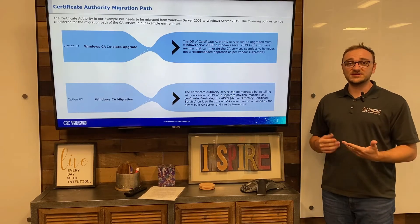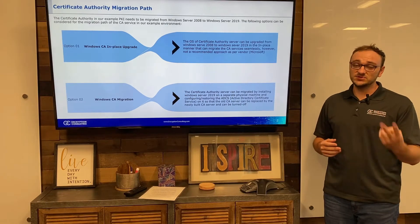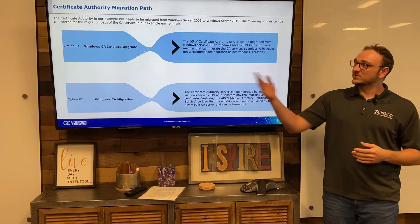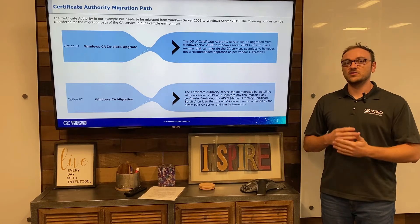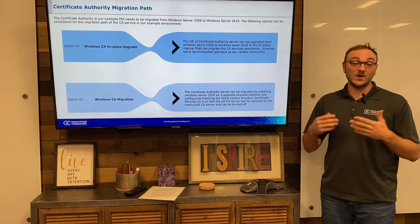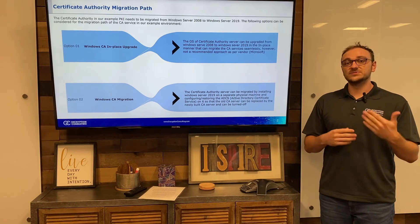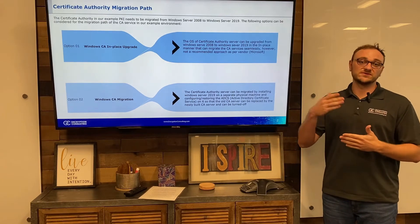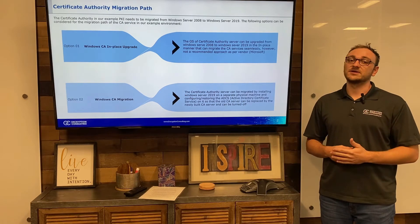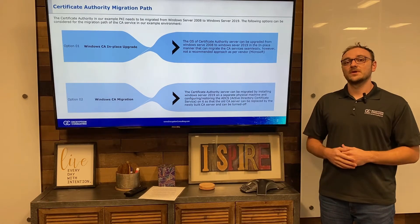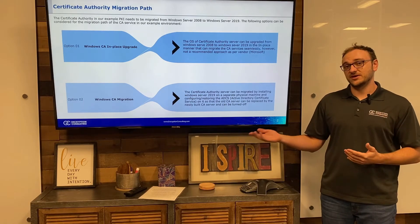When migrating your Certificate Authority from Windows Server 2008 to Windows Server 2019, you have two options available. The first one is doing an in-place upgrade, which means actually updating your production Certificate Authority while it's there — updating from 2008 up to Windows Server 2019 on the same machine. This makes sure that the CA services are seamlessly migrated, but this is not the recommended way. Microsoft itself actually recommends the second option, which is an actual Windows CA migration.